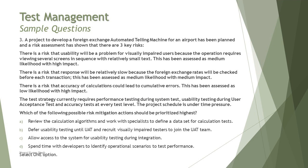Let's look at question number three. It's a scenario-based question, so you need to be very careful when you read it and start pointing out the important aspects. A project to develop a foreign exchange automated teller machine for an airport has been planned, and a risk assessment has shown three key risk areas. The first risk is that usability will be a problem for visually impaired users because the operation requires viewing several screens in sequence with relatively small text. This has been assessed as medium likelihood with high impact.